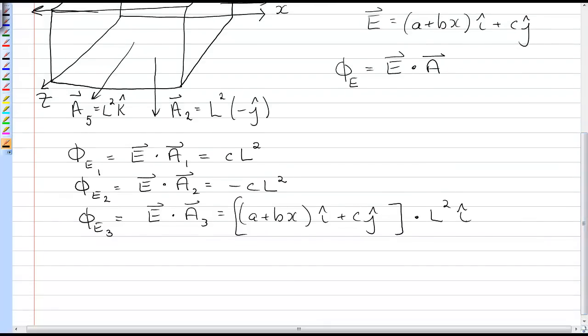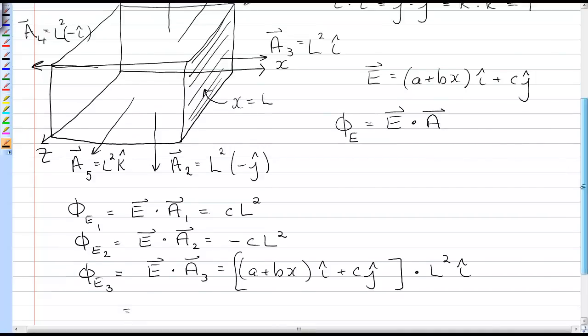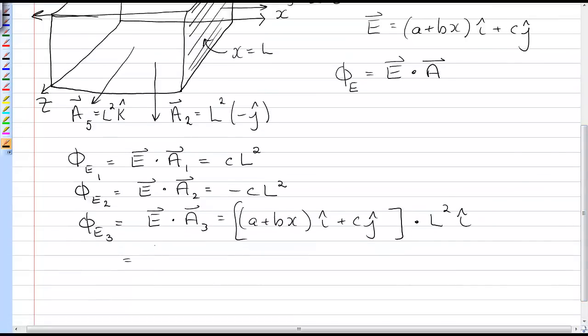Now, just the i-hat terms are left, but I need to evaluate x on that face. So if I go back to my cube and look at the face on A3, this face, I can see that everywhere on that face, x is exactly equal to L. And so I have to sub in that x equals L.